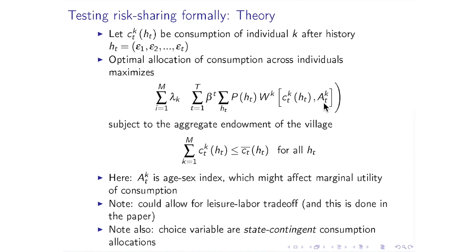The contemporary utility functions have as arguments the consumption of individual K at date T given history H-T, plus an age-gender index. Not everyone is the same age or gender — 18-year-old males eat twice as much as anybody else essentially — so we want to adjust utility for metabolic requirements, using metabolic weights measured in a dietary survey. The probability of the history actually happening is also in the objective, and we sum over all possible histories at each date T and discount by beta.